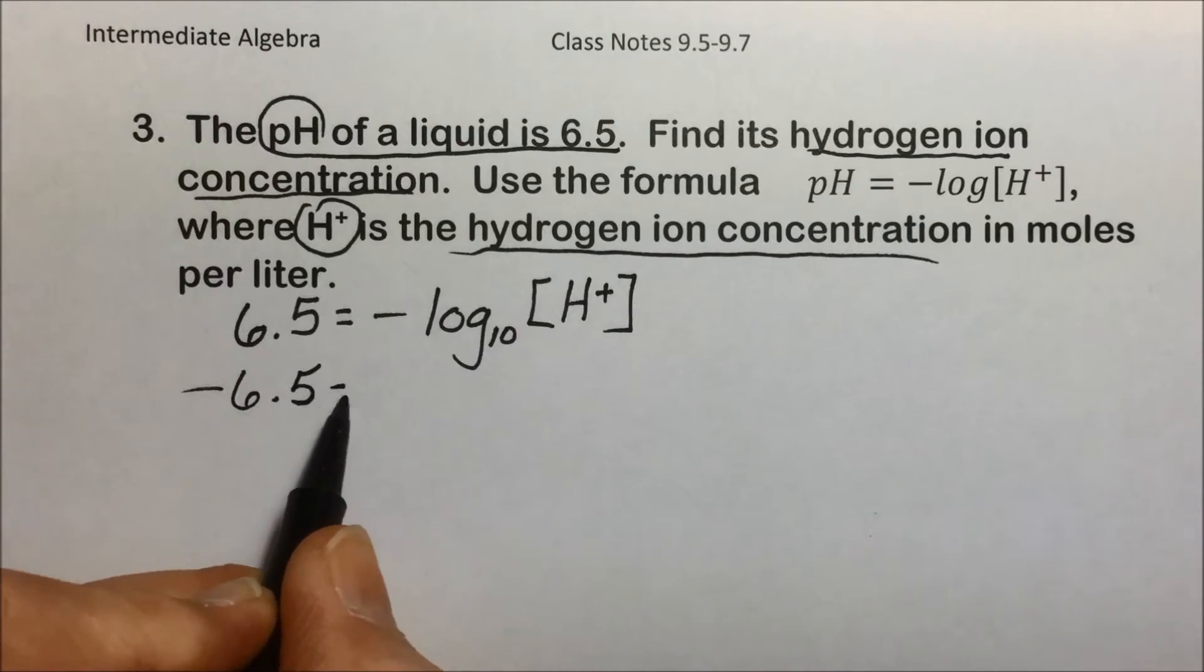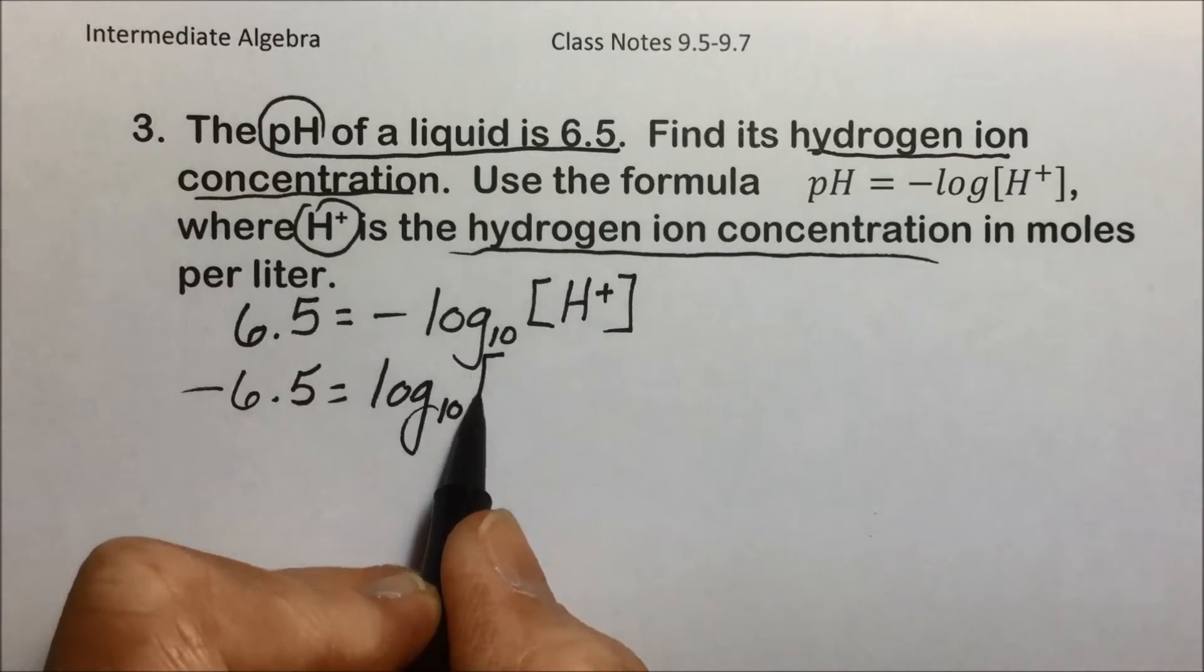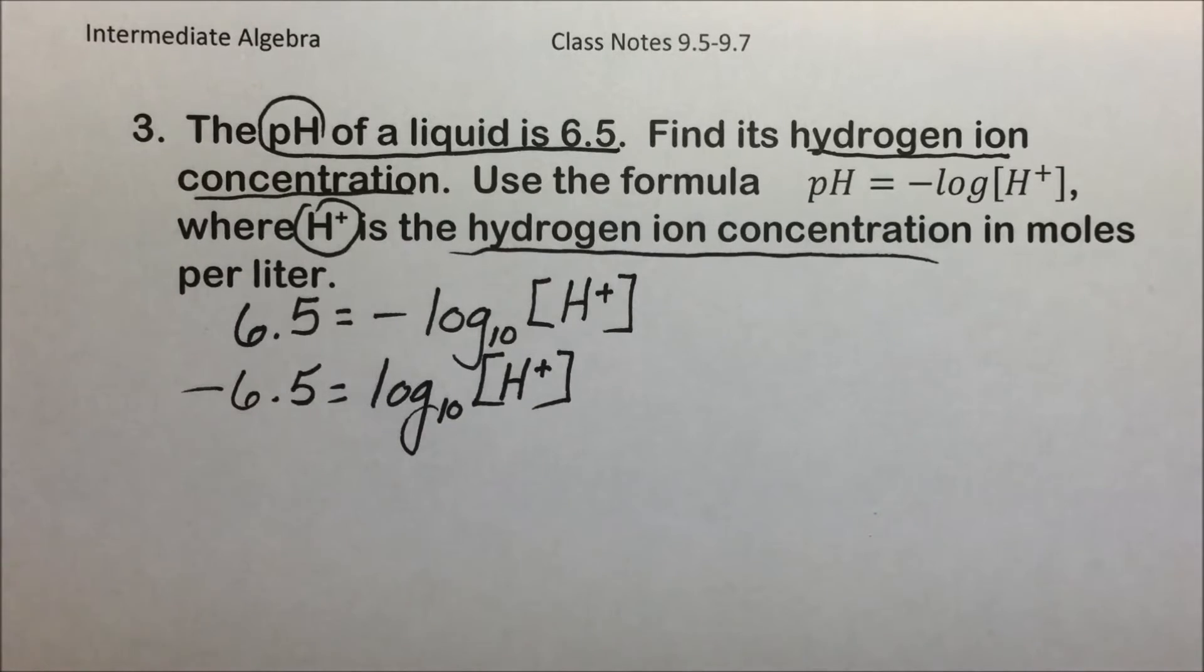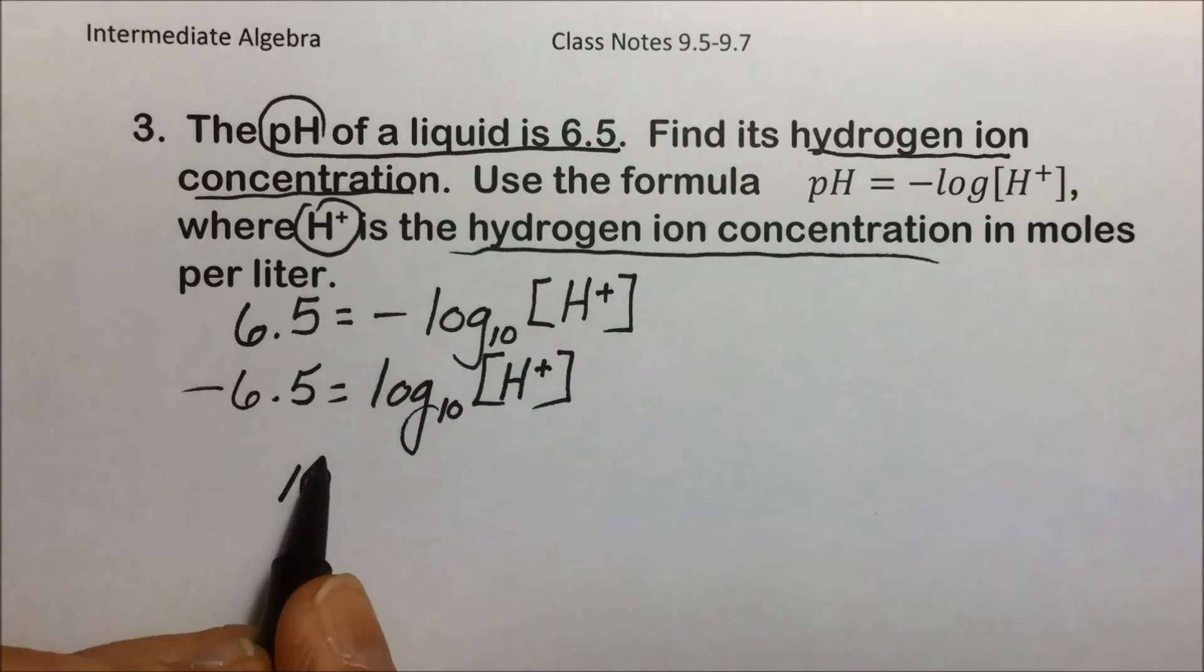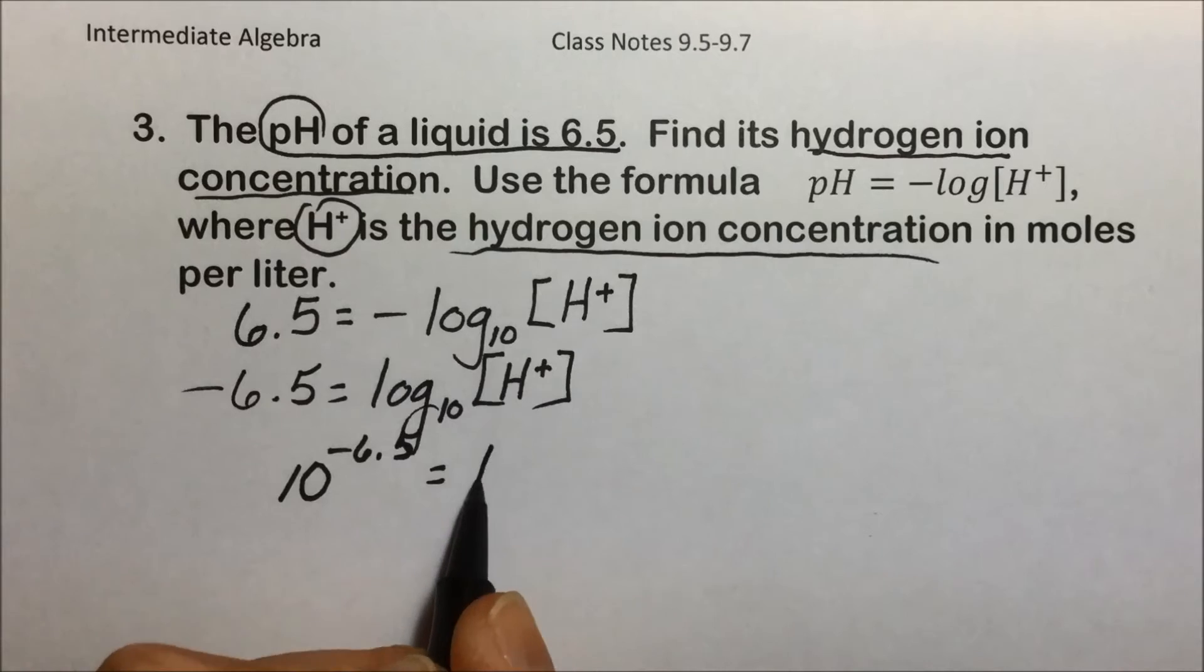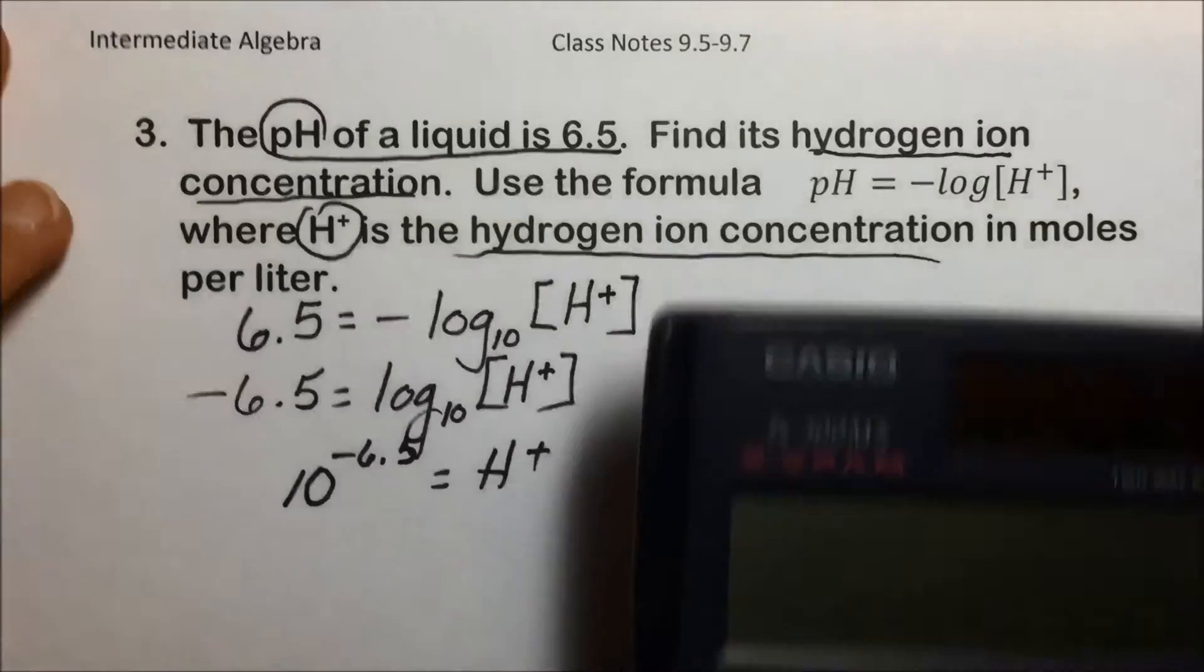So we have -6.5 = log base 10 of our H+. Putting this in exponential form then, an equivalent would be 10^(-6.5) is equal to our hydrogen ion concentration.